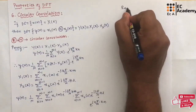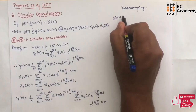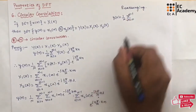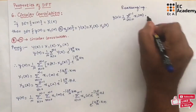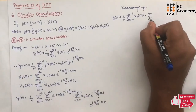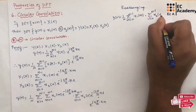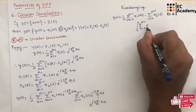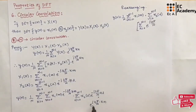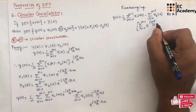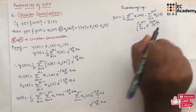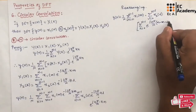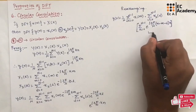Rearranging the above equation, we get Y(N) equal to 1/N summation from M=0 to N-1 of X1(M), into summation from L=0 to N-1 of X2(L), into summation from K=0 to N-1 of E to the power of J(2π/N)(N-M-L)K. Let us call this equation number 1.